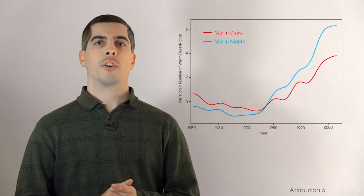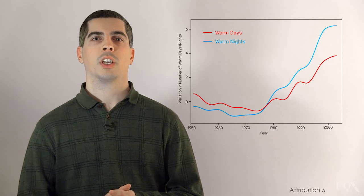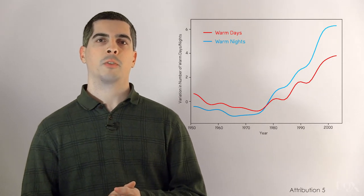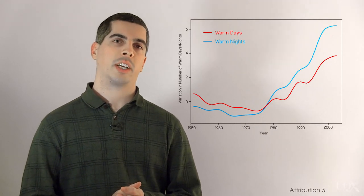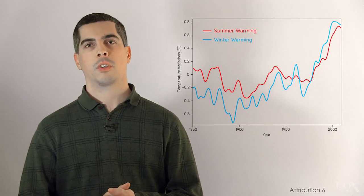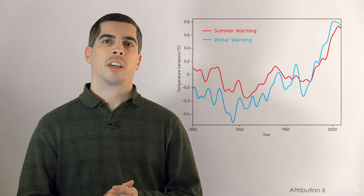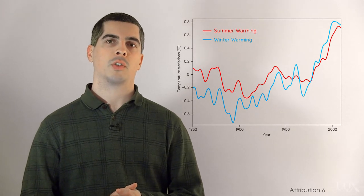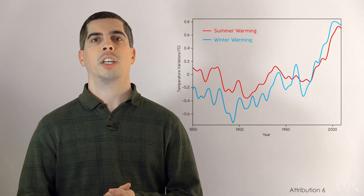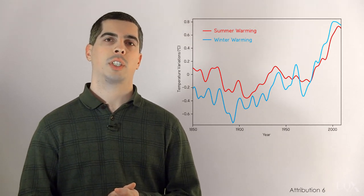It took over 130 years before John Tyndall's prediction was confirmed, but over the last few decades, surface measurements have found nights warming faster than days, and winters warming faster than summers. The difference between nighttime and daytime temperatures, and winter and summer temperatures is shrinking, just as Tyndall anticipated would happen due to the increased greenhouse effect.